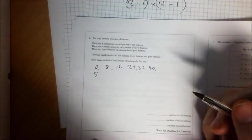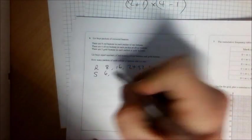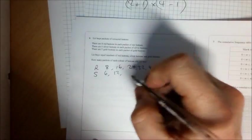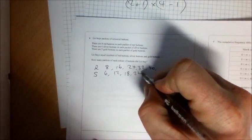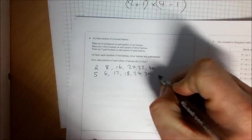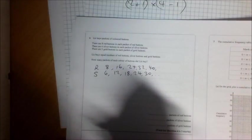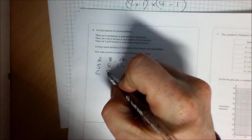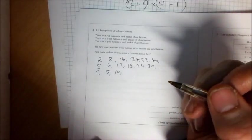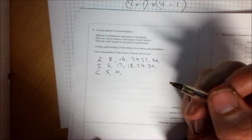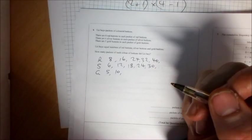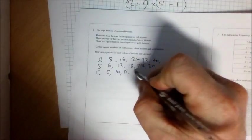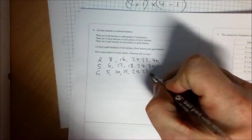What about the silver buttons? She could have six, she could have 12, 18, 24, 30, etc. And finally, when she buys gold buttons, if she buys one packet she'll get five, two packets she'll get 10, three packets 15, four packets 20, 25, etc.